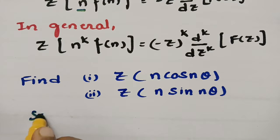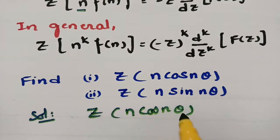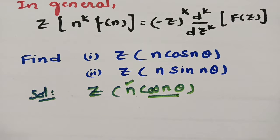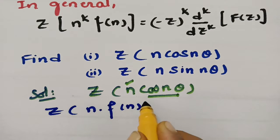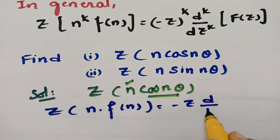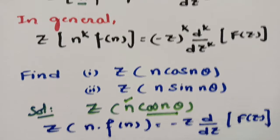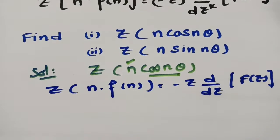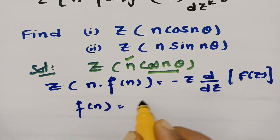Let us get started. Here, Z transform of n·cos(nθ) — cos(nθ) is multiplied by n. First of all, I need the formula: Z transform of n·f(n) is equal to minus z times d/dz of F(z), according to our multiplication by n property. So here, what is f(n)? f(n) is nothing but cos(nθ).